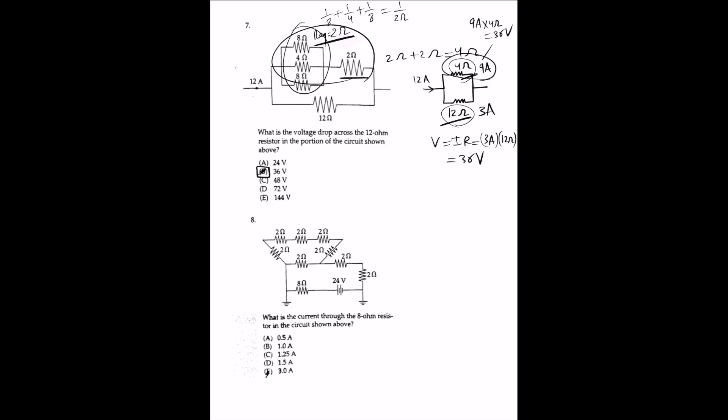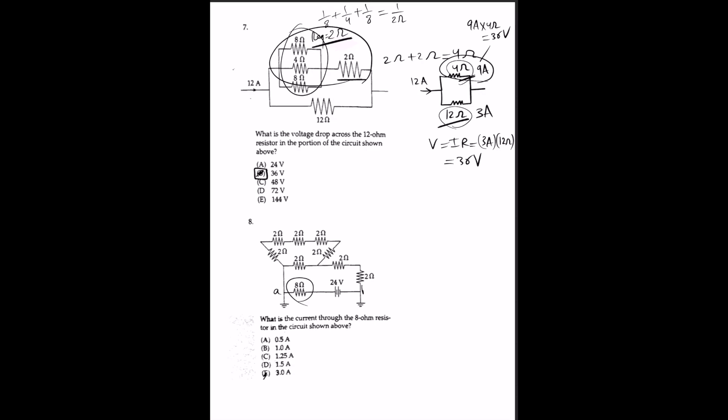For question 8, find the current through the 8-ohm resistor. Points A and B are grounded, so they have the same potential — call it zero. Traveling from B to A across the battery, the potential increases by 24 volts, so it must decrease by 24 volts across the 8-ohm resistor. The current equals 24V / 8Ω = 3 amperes. The answer is E. Note this is a trick question: despite the complicated figure, we only need to focus on this one branch.